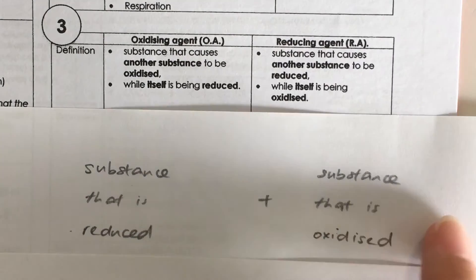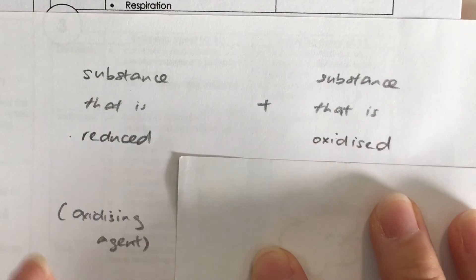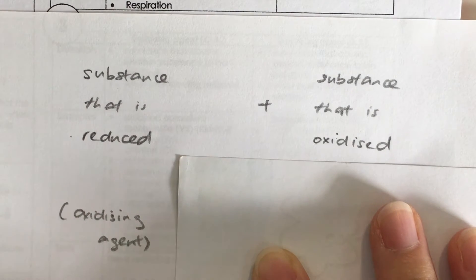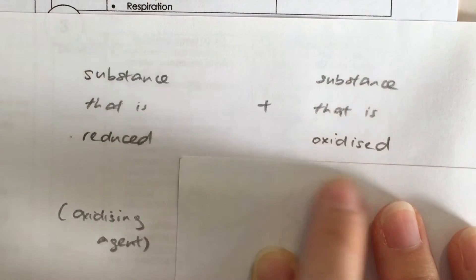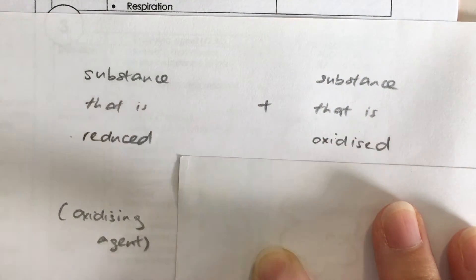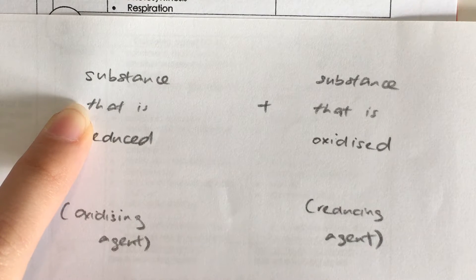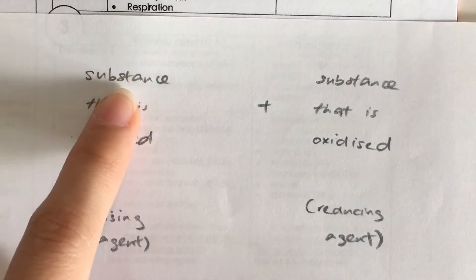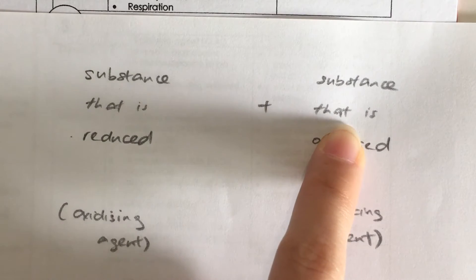In a redox reaction, a substance must be reduced and a substance must be oxidized. The substance that is reduced we call it an oxidizing agent, because this substance oxidizes others. The substance that is being oxidized we call it a reducing agent, because it reduces others. So an oxidizing agent oxidizes others and itself will be reduced, while a reducing agent reduces others and itself is being oxidized.